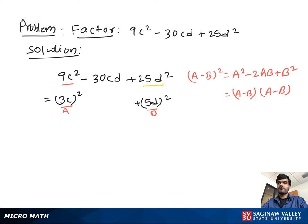If we suppose 3c as a and 5d as b, then we need the middle part 2ab and write the middle part as 2 times 3c times 5d, which equals 30cd.